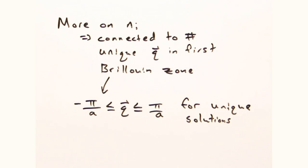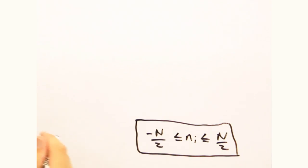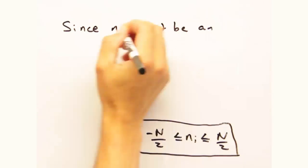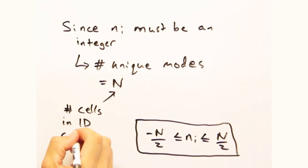Well, we have an equation for Q in terms of n_i. So after some plug and chug, we get that n_i is bounded by minus capital N over 2 to capital N over 2. Since there is a unique mode at each n_i, and n_i is an integer, the total number of modes is always equal to the number of cells in our 1D crystal.